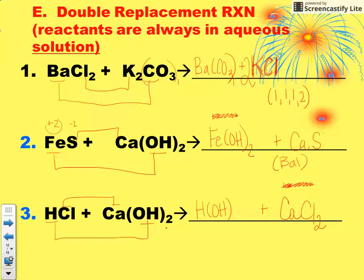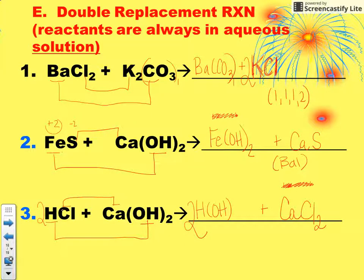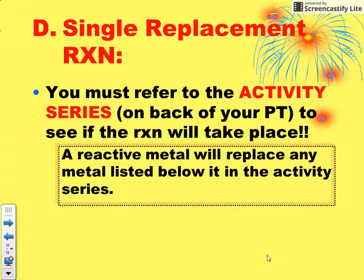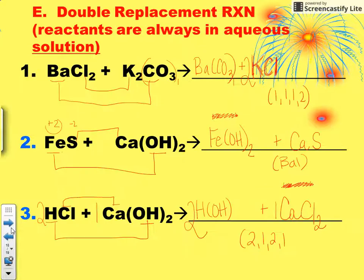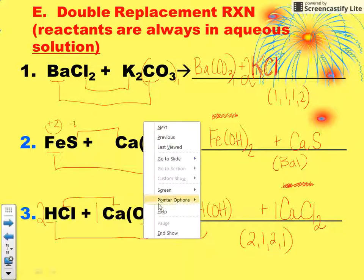Now balance it. Looking over here, you see two hydroxides, so put a 2 in front of the water — that gives two hydroxides and also two hydrogens. Come over here and put a 2 in front of the hydrochloric acid, giving two chlorines. You already have two chlorines on the product side, and one calcium on each side. So the balanced equation is 2, 1, 2, 1. That is our final example, and now you should be able to do that.